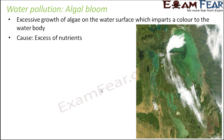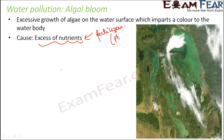What do algae need to grow? They need sunlight, slow-moving water, and excess nutrients. Excess nutrients are provided by fertilizers rich in phosphates, and sunlight is always available. Slow-moving water is also important — that's why algal bloom is more commonly seen in ponds or lakes, because the water there is not as fast-moving as in seas or rivers.